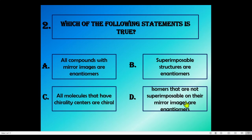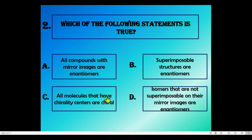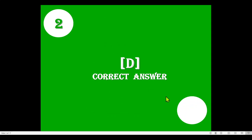This question is about enantiomers. Enantiomers must have a mirror image, and that mirror image must be non-superimposable. Mirror image alone is not a criterion, superimposable structures are not enantiomers, and all molecules having a chiral center are not necessarily true for this statement. So among the options, option D is the correct one for enantiomers.